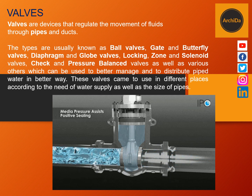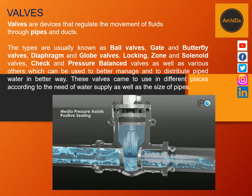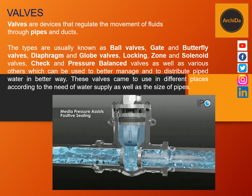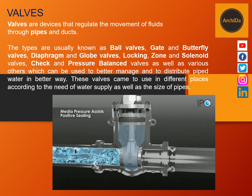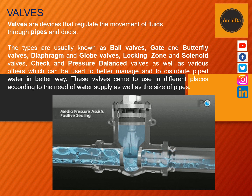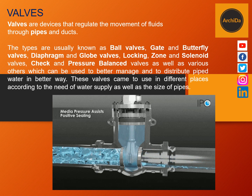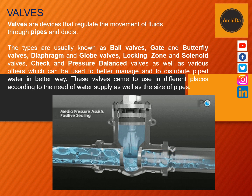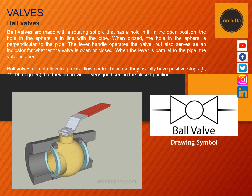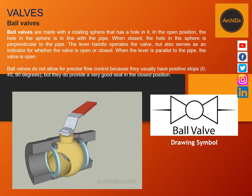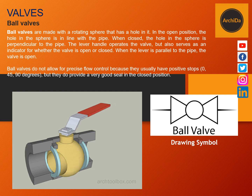The next part of a hot and cold water system are called valves. Valves are devices that regulate the movement of fluids through the pipes. The types are usually known as ball valves, gate and butterfly valves, diaphragm and globe valves, locking valves, zone and solenoid valves, and check and pressure balance valves. Ball valves are made with a rotating sphere that has a hole in it. In the open position, the hole in the sphere is in line with the pipe. When closed, the hole is perpendicular to the pipe, thus preventing the water from flowing.